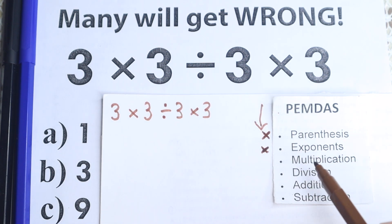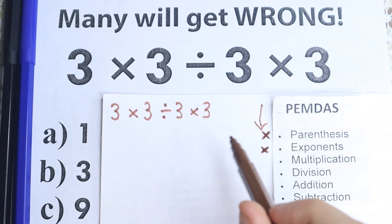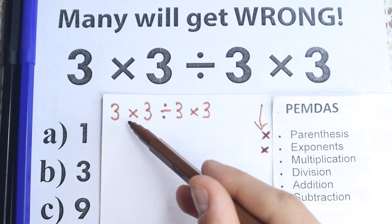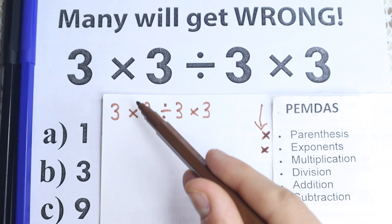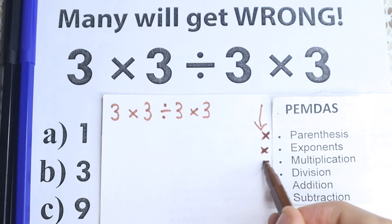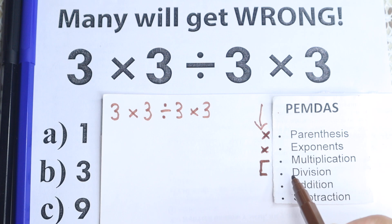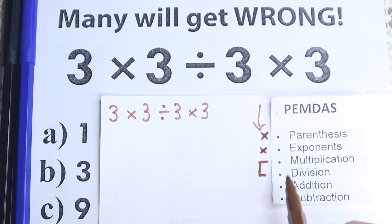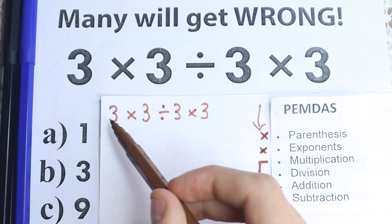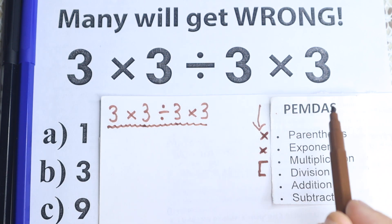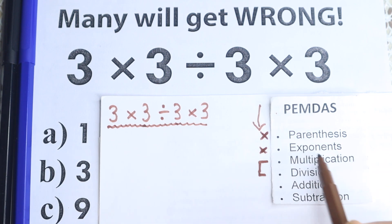The next step according to PEMDAS is multiplication. We have multiplication here and multiplication here. A lot of students ask which one to start with — but we also have a division sign. This is the main common mistake: many forget about division. Because multiplication and division are one common group. So we need to look at this multiplication-division group together and scan the entire expression for it.